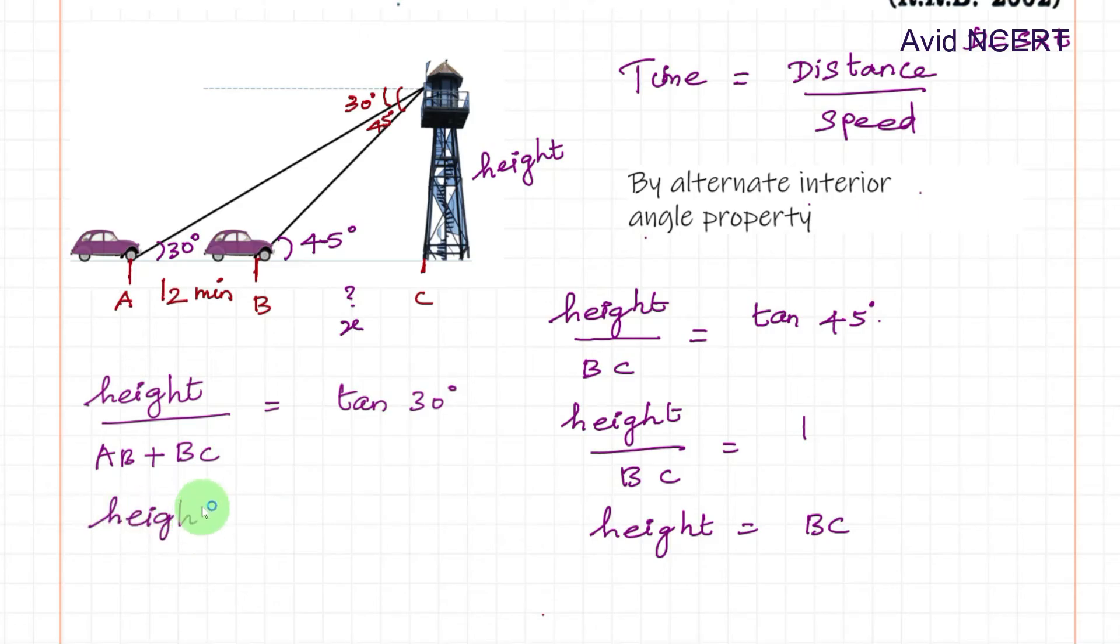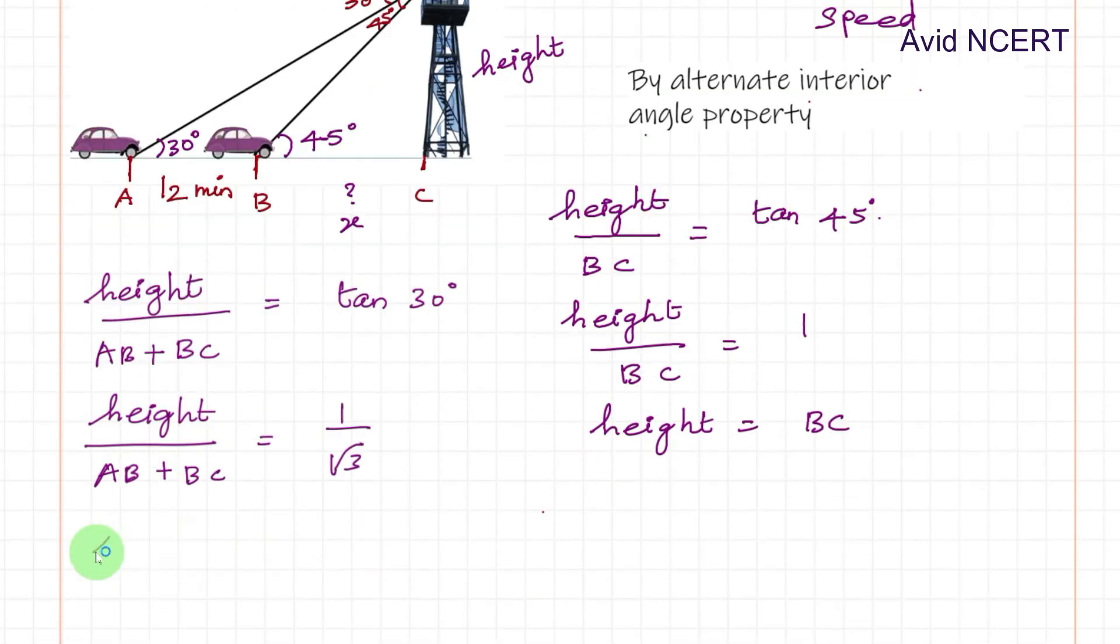Therefore, AB plus BC equals 1 by root 3, so height equals AB plus BC divided by root 3.